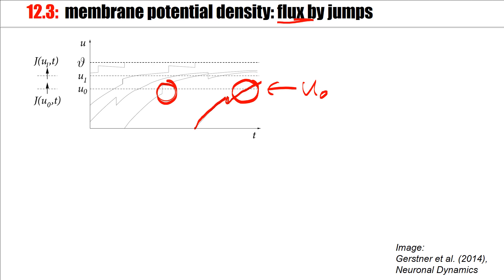I will start with flux by jumps. So here's my reference potential, my reference trajectory, my reference potential U0. And now we assume that a little jump is introduced caused by stochastic spike arrival. Each stochastic spike arrival will have an effect that's represented by a difference or jump amplitude difference in membrane potential, which I call delta U jump.